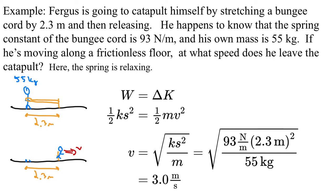If Fergus is moving along a frictionless floor, at what speed does he leave the catapult? So he's pulled himself back, and now he's just using it to accelerate him. In this case, the spring is relaxing. He's stretched the bungee cord by 2.3 meters, and it's going to go back to its original length. So we would use the positive form for the work done. The spring does positive work on him, and it turns it into kinetic energy because the system here is just Fergus. So work is being done on that system, so the work is always delta E, but since he's the only thing in the system, delta E is delta K, and we get a half KS square equals a half MV square, which lets us do some simple algebra, cross multiply by the halves, they go away, divide by the Ms, take the square root, and we get that the velocity here would be square root of KS squared over M.